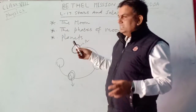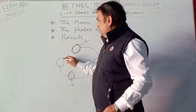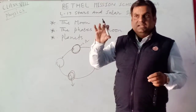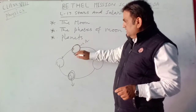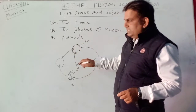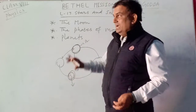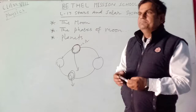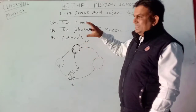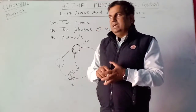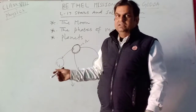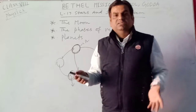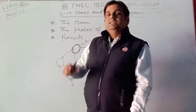The moon is the natural satellite of the earth and has no light of its own. When sunlight falls on the surface of the moon, it reflects toward us and we see the moon shining in the sky. It is the second brightest body in the sky after the sun. The moon does not appear during daytime — it appears only at night.